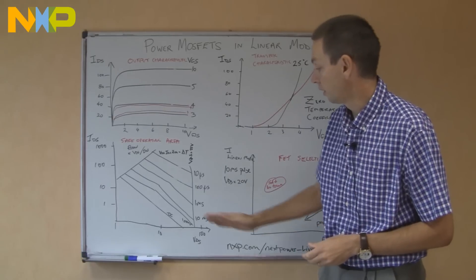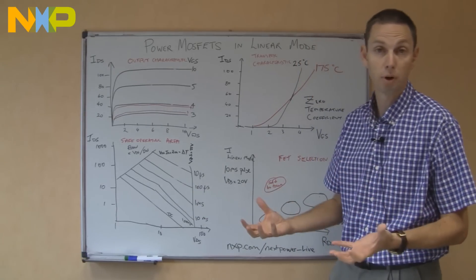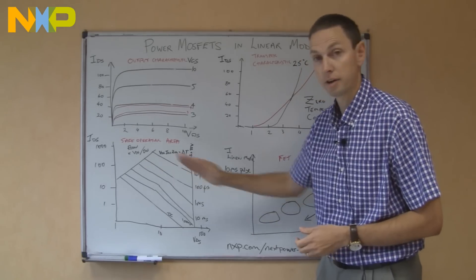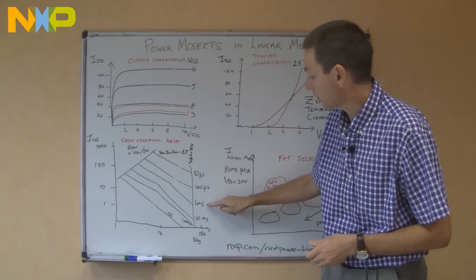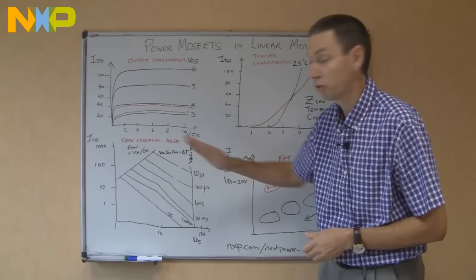These lines have different pulse lengths. So if you're in DC operation, you've got to stay below, you've got to stay in this triangular area down here below the DC line, and then your MOSFET will be safe. For shorter pulses, if you've got shorter pulses, you're putting less power into the MOSFET, so you can run at higher currents. So as the pulse lengths get smaller, you are allowed to have more and more current.